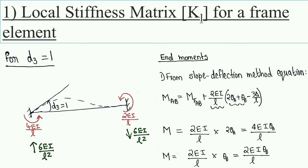Next, consider D3 = 1. D3 is the rotation in the z direction at node 1. When a rotation acts in a member, the near-end moment is 4EI/L and the far-end moment is 2EI/L when the far end is fixed. Similarly, the near-end force and far-end force are both 6EI/L². To derive these moments, we use the slope deflection equation: MAB = MFAB + (2EI/L)(2θA + θB − 3δ/L).